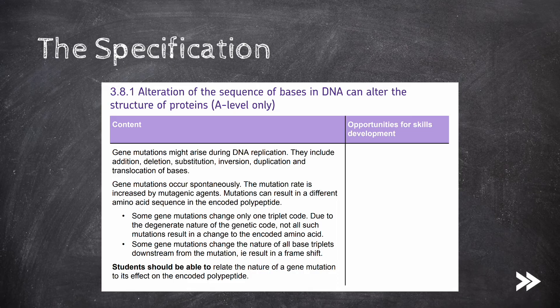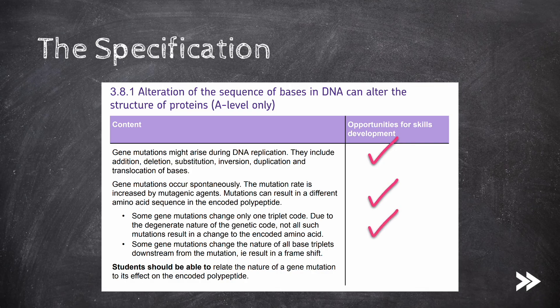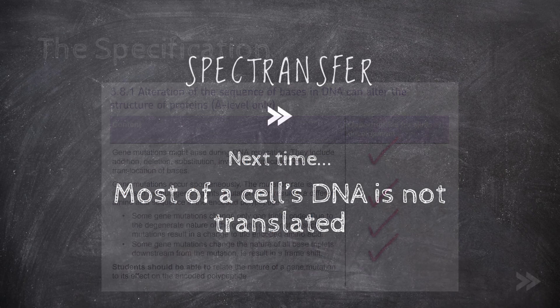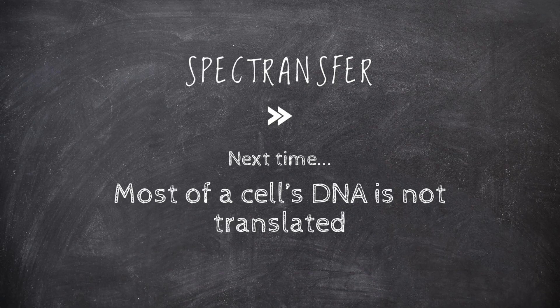That's what this part of the specification covers. We have covered how gene mutations may arise during DNA replication, including addition, deletion, substitution, inversion, duplication, and translocation mutations. We've covered how gene mutations occur spontaneously, and how the mutation rate may be increased by mutagenic agents. We've covered how not all mutations result in a change to the encoded amino acid, due to the degenerate nature of the genetic code. And finally, we have also covered how a frameshift is caused. That's it for now guys, thanks for watching, please subscribe and comment. Next time we will be covering topic 3.8.2.1, most of a cell's DNA is not translated.